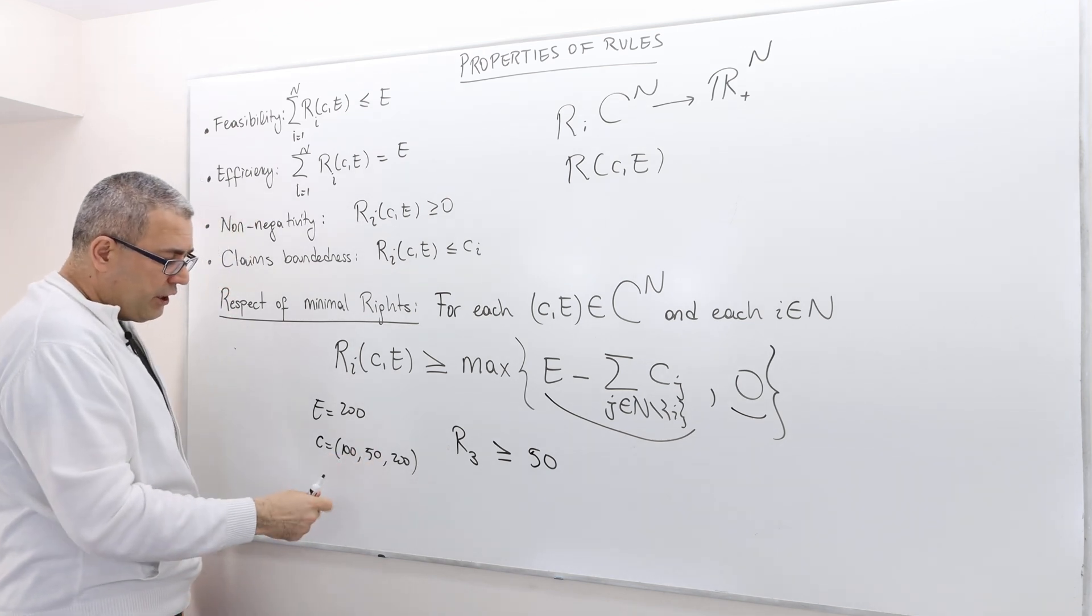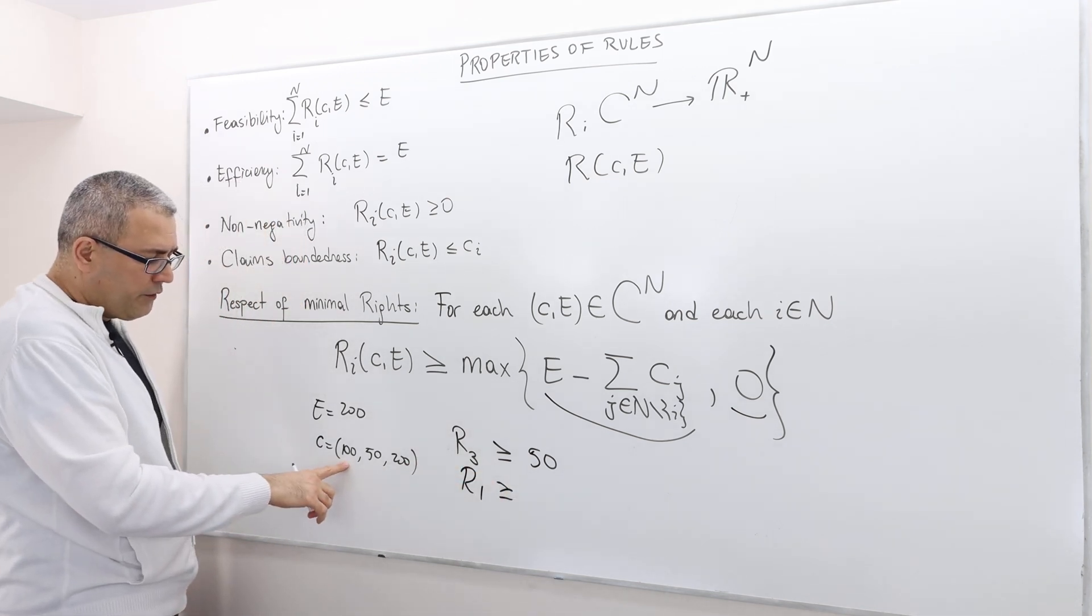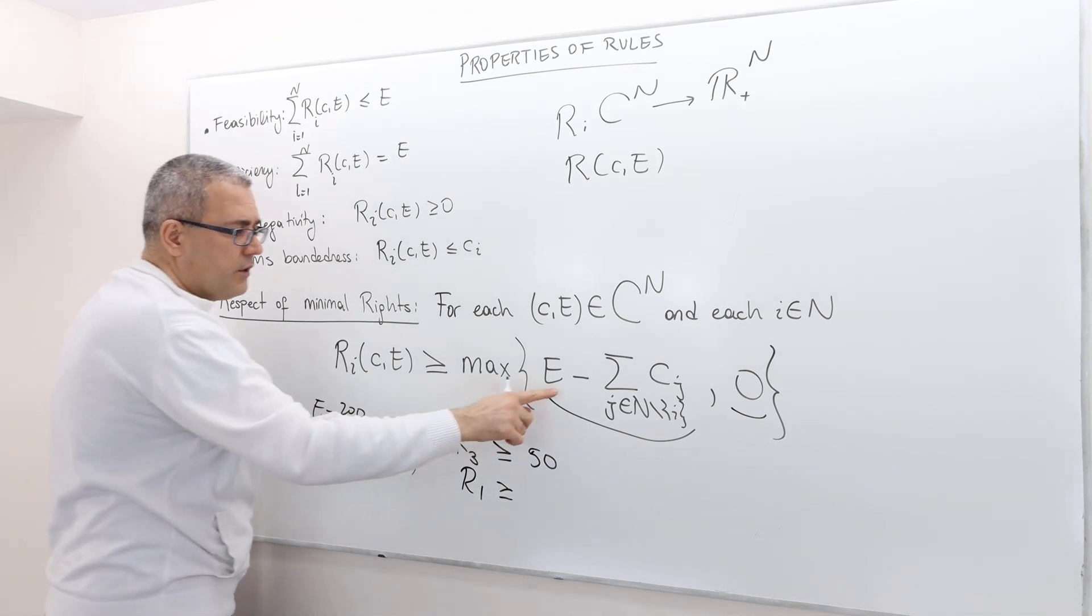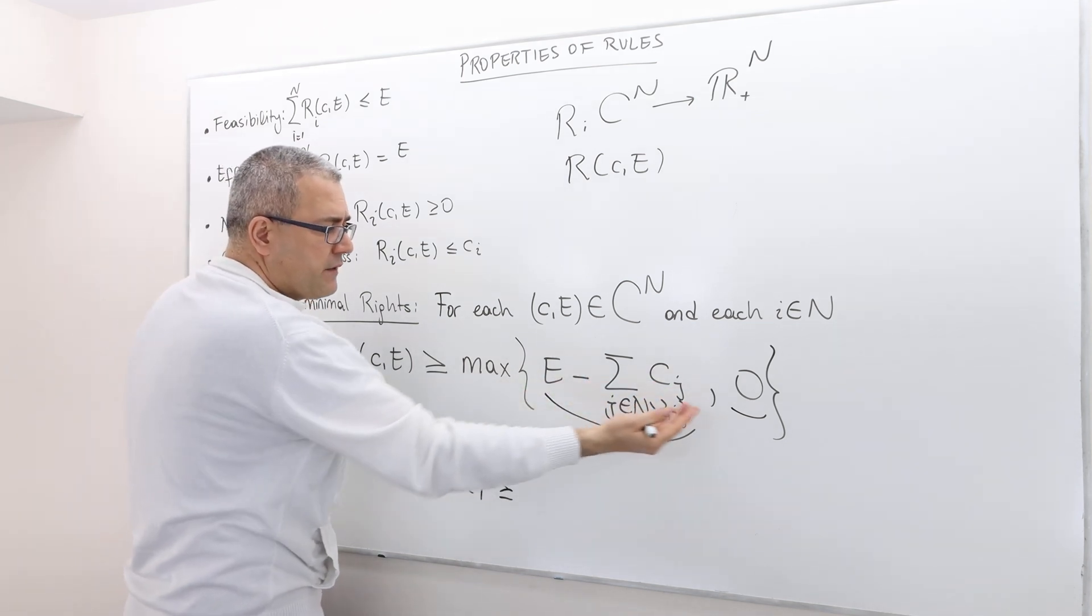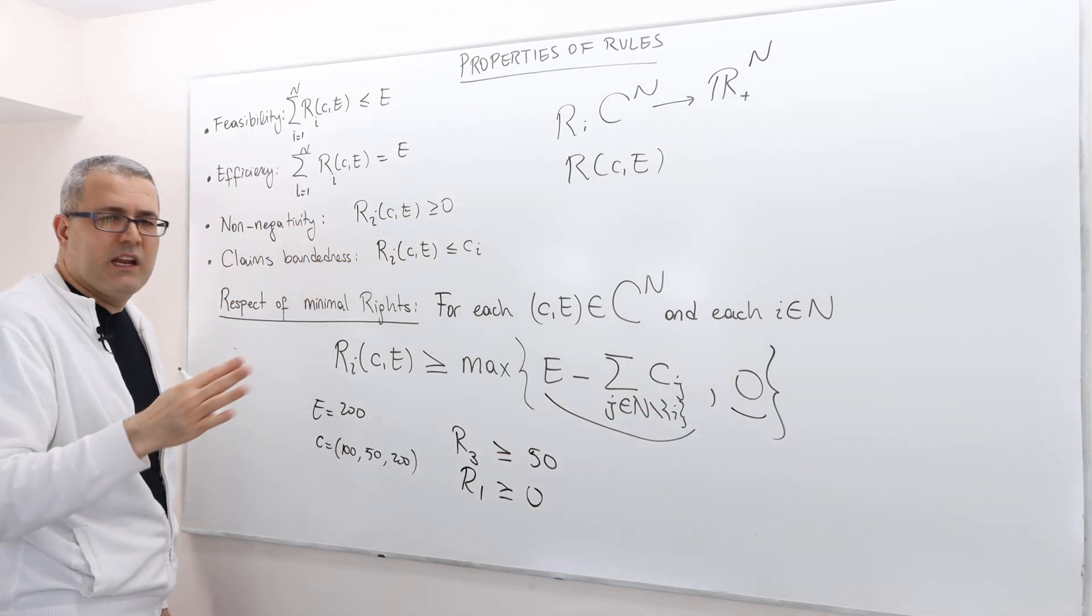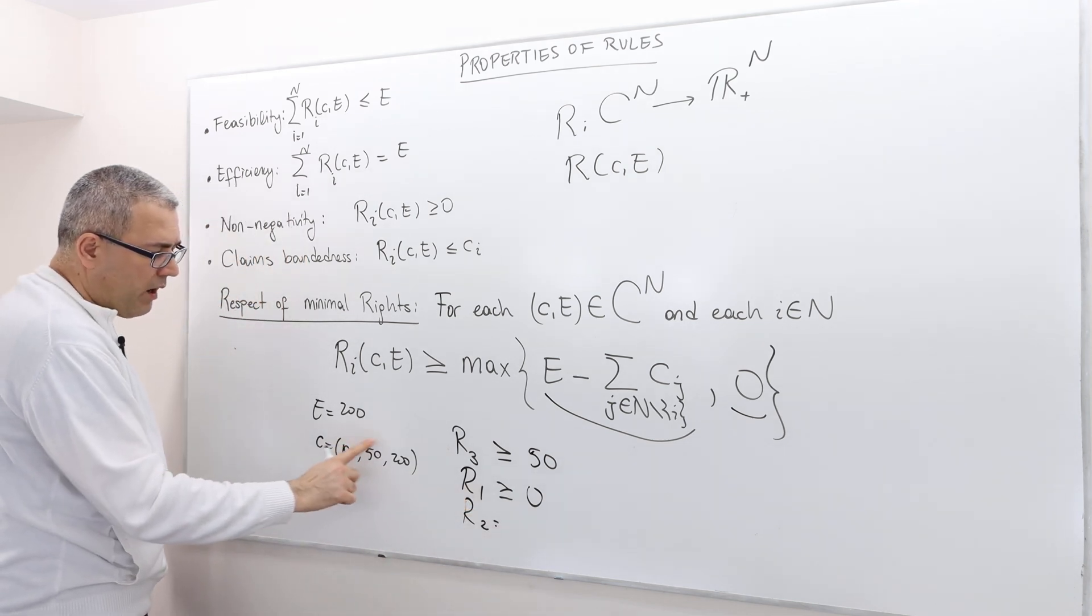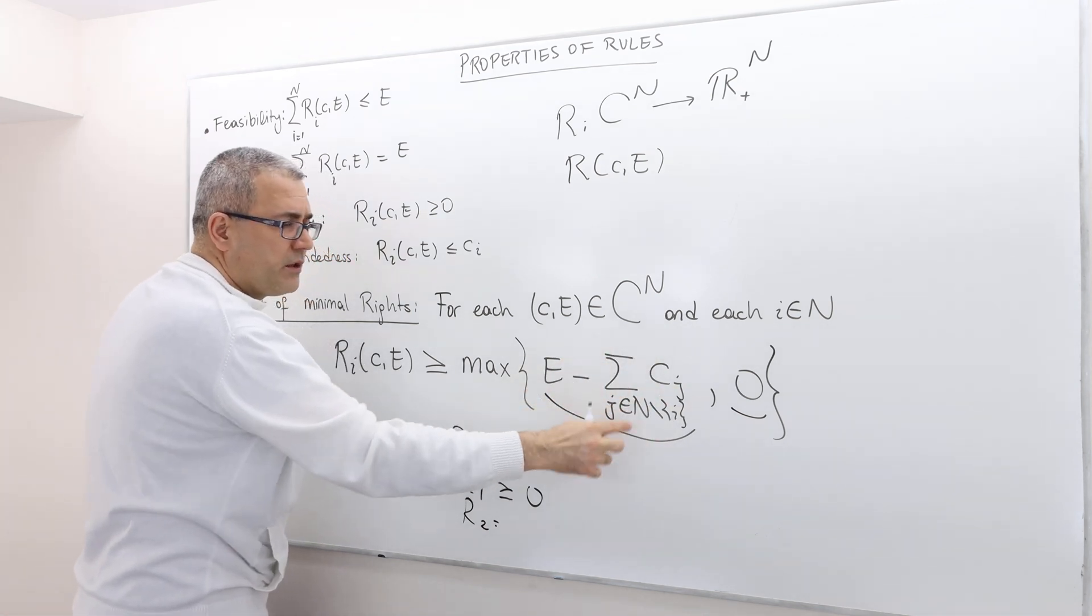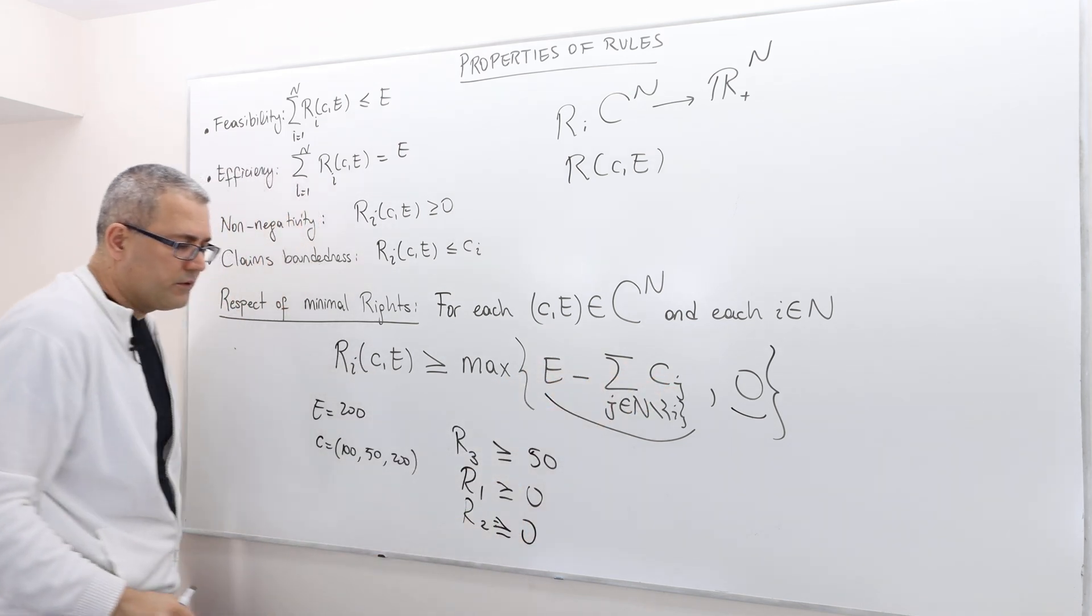Well, what about the other two agents? For example, what is R_1, the minimum? Well, R_1, the first agent, he's going to look at the sum of the other two agents. It's 250. So 200 minus 250, it's minus 50. But the maximum of minus 50 and 0 is 0. So therefore, R_1 can be any number, non-negative. R_2, well, the same thing. Because player 1 and 3's total claim is 300. So 200 minus 300 is minus 100, which is less than 0. So therefore, this should also be equal to 0.